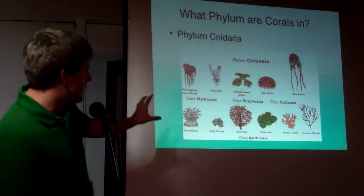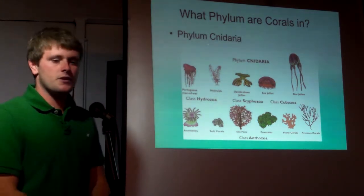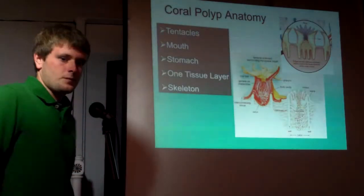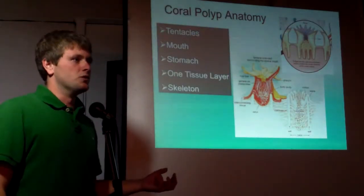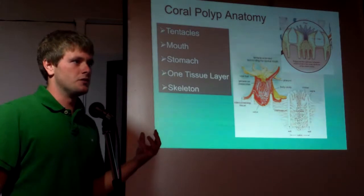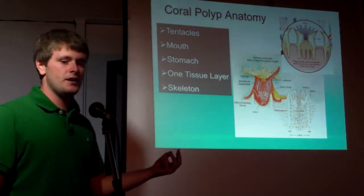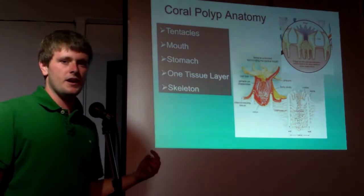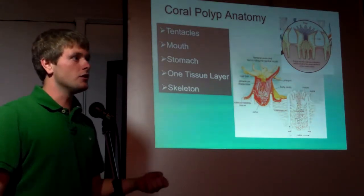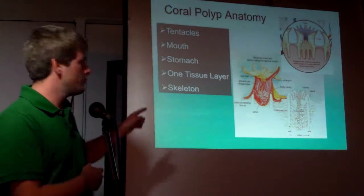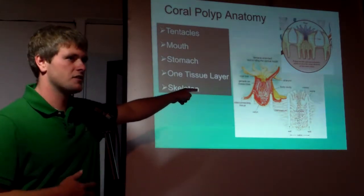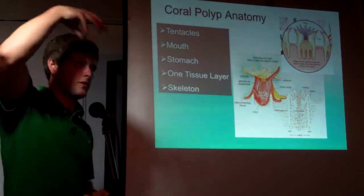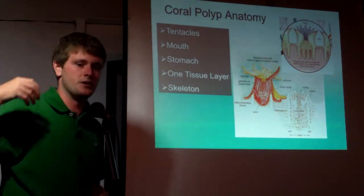What sets the cnidarians — the corals — apart from other creatures? They have one tissue layer that surrounds a stomach with one opening, and that opening is surrounded by a ring of tentacles. When they are adults, they'll have either a polyp form, like corals or sea anemones, or a medusa form like a jellyfish, where the mouth and tentacles are facing downwards.